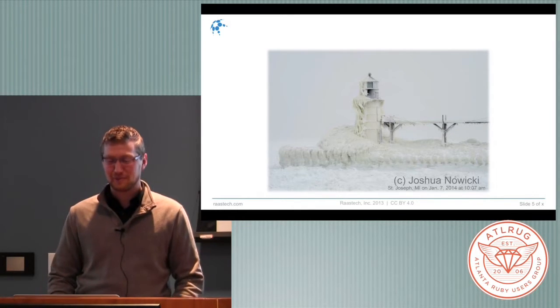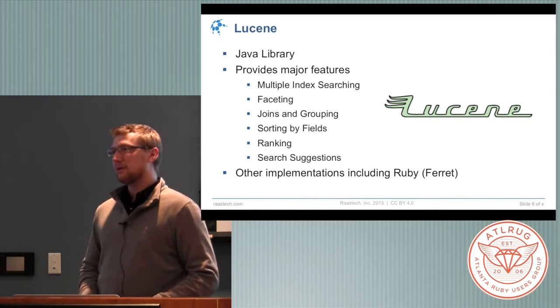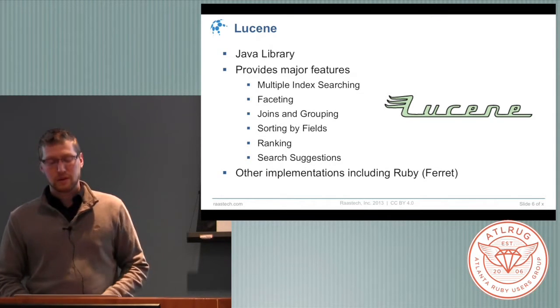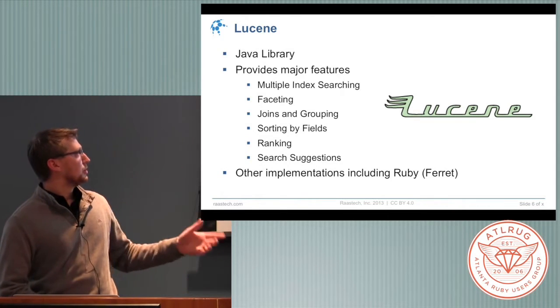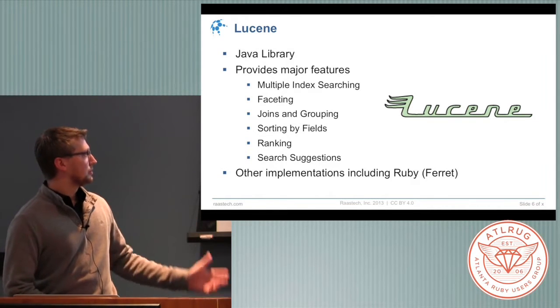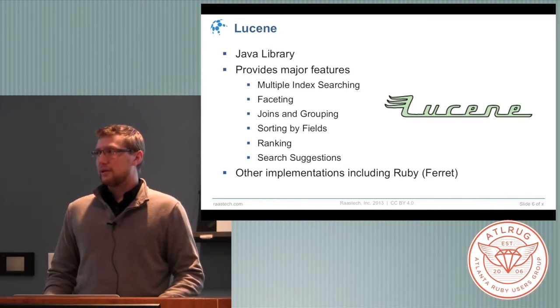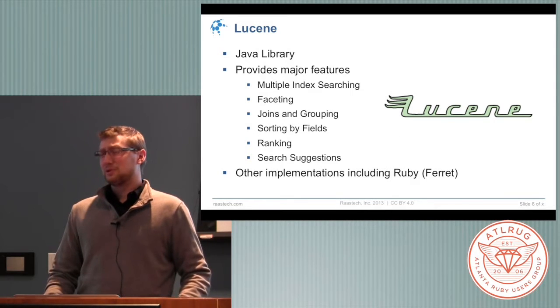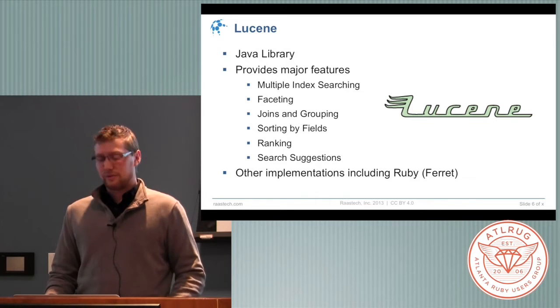But enough about me. Let's talk a little bit about Solr. Solr in and of itself is based on the Lucene library. Lucene is written in Java and as is Solr, and it has a lot of major features: multiple index searching, faceting, joins, sorting by fields, and even it has pluggable rankings. There's a couple of different models. I'm sure you could roll your own if you really wanted to, but there's a few options available.